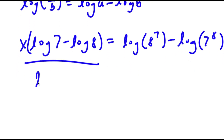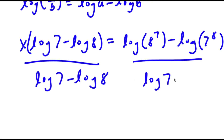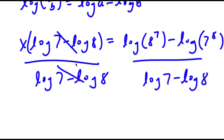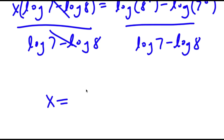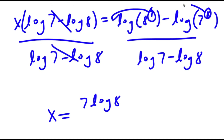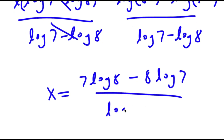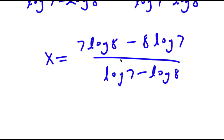Dividing both sides by log 7 minus log 8, these cancel out. Now I have x equals 7 times log 8 minus 8 times log 7, all over log 7 minus log 8. Plugging in the values of log 8 and log 7, you get x equals negative 0.4399.